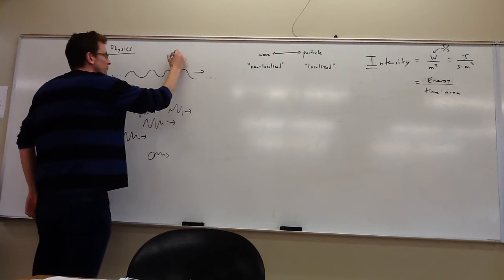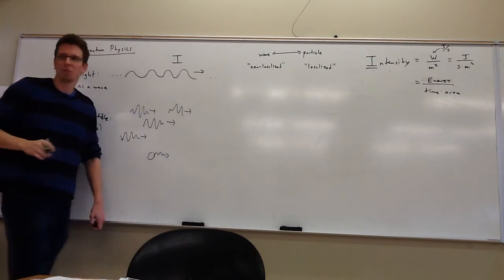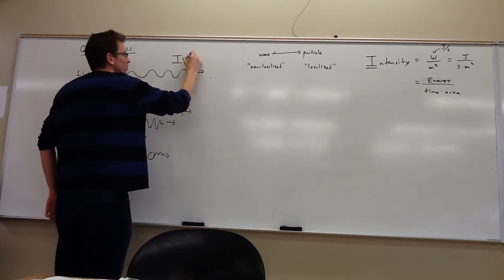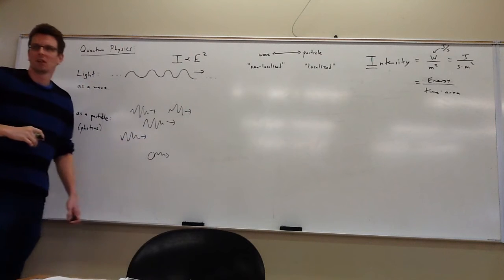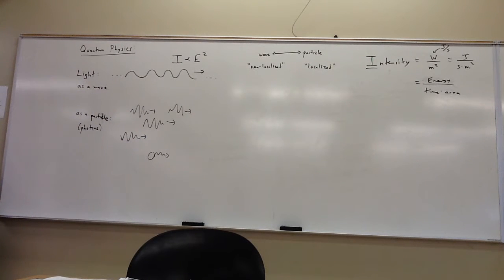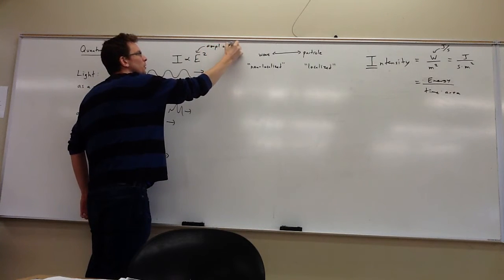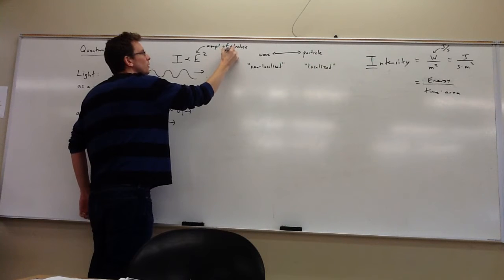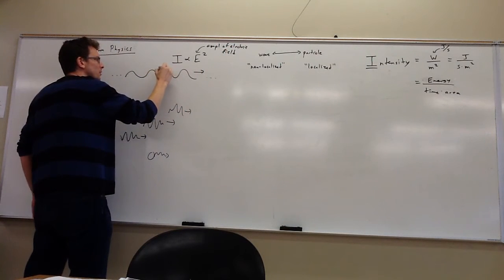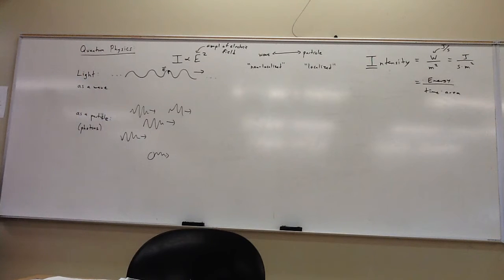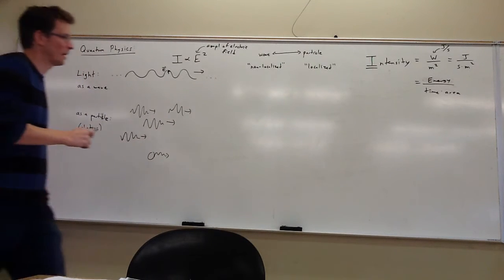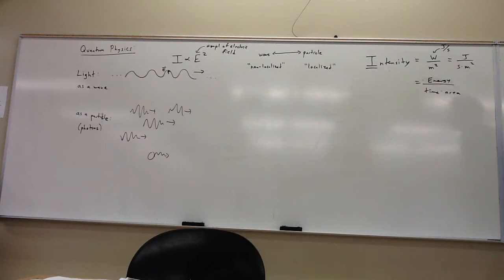When light was a wave, the intensity — the brightness — was proportional to the square of the amplitude of the wave. Be careful: the capital E here is the amplitude of the electric field, not energy. So if the wave has a bigger amplitude, it's going to be more bright. And as you send it through a bunch of polarizers, the amplitude will get reduced and it will get less bright.